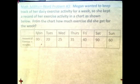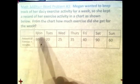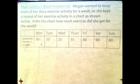Let's look at the last word problem for addition. This one involves a table. Let's read this: Megan wanted to keep track of her daily exercise activity for a week, so she kept a record of her exercise activity in a chart as shown below. You can see here. From the chart, how much exercise did she get for the week?